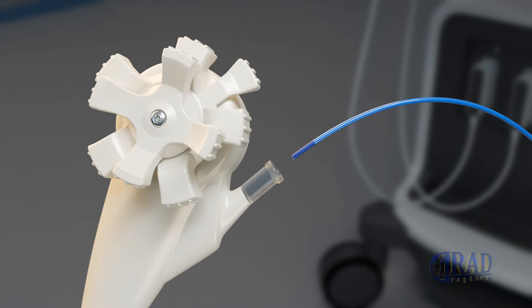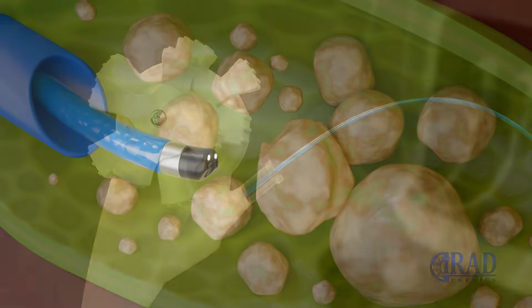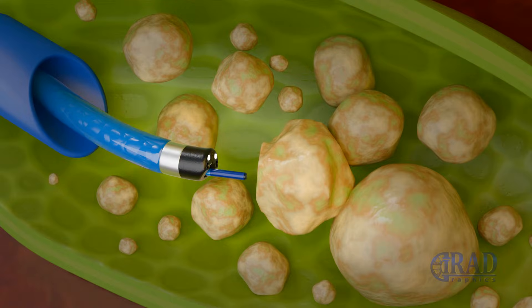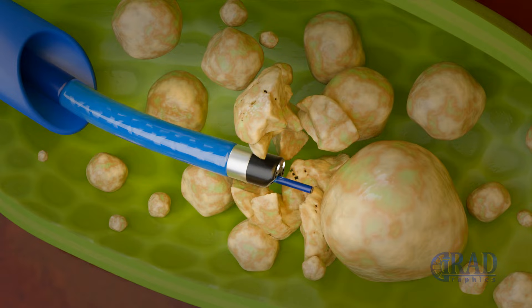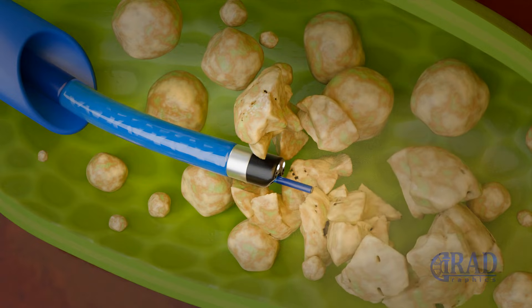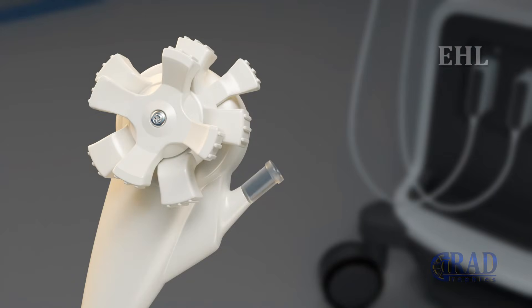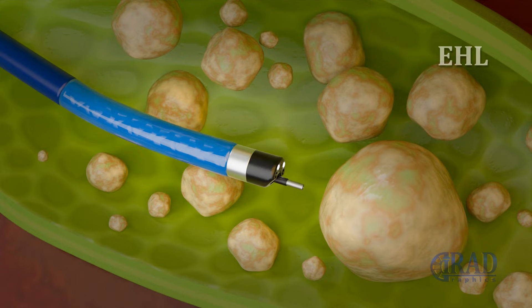As the next step, a laser fiber is advanced through the work channel of the scope, and the Holmium laser is used to fragment the gallstone into smaller pieces. Alternatively, an electrohydraulic lithotripsy probe can be deployed through the scope to fragment the stone using adjustable energy levels and pulses.